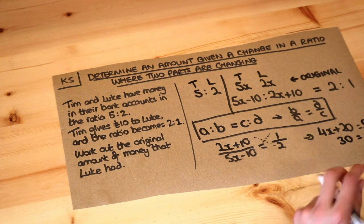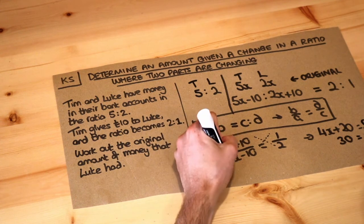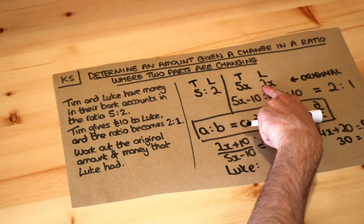Now we're nearly done. We've worked out x is 30. So we want to work out the original amount of money that Luke had. Well Luke we said had 2x pounds. That's the original amount that each person had.